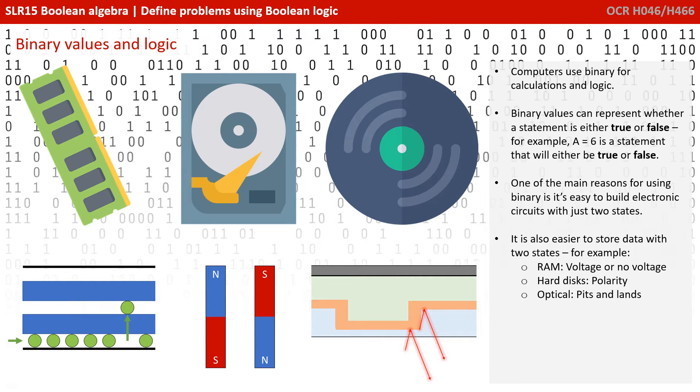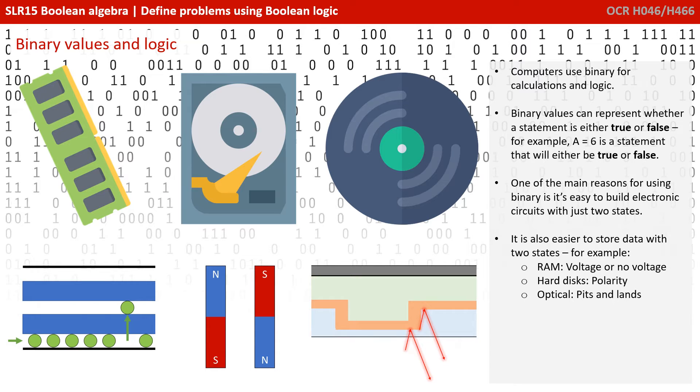One of the main reasons for using binary is it's easy to build electronic circuits with just two states. It's also easier to store data with two states. For example, voltage or no voltage in RAM, polarity on hard disks, and pits and lands on optical media.